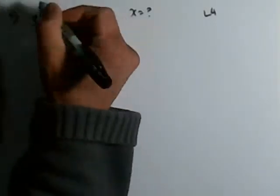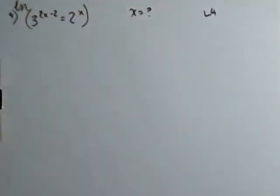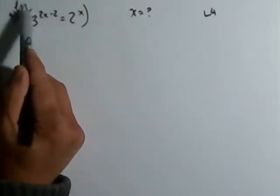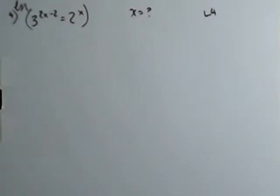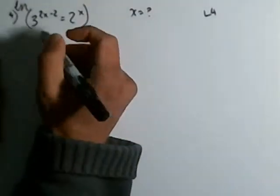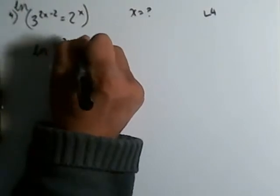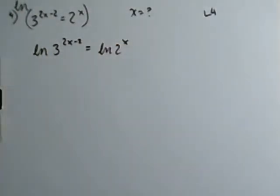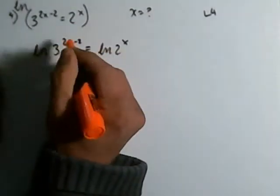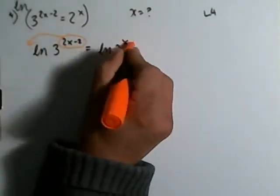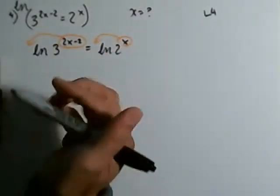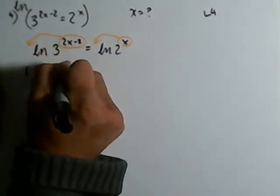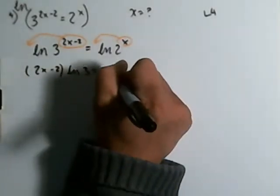We could common log it — it really doesn't matter whether you use common log or natural log. I like to use natural logs because I only have two letters to write instead of three. So if I natural log the left side: natural log of three to the 2x minus 2 is equal to natural log of two to the x. The beauty of logs is that the exponent can come down: you have 2x minus 2 times natural log of three equals x times the natural log of two.